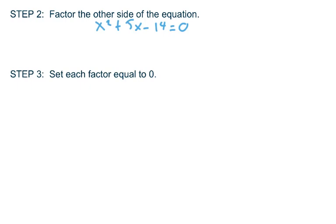Step two says factor the other side of the equation. It's a quadratic expression, a trinomial. We should be able to factor that by trial and error. What we would be looking for is two numbers whose product is negative 14, but whose sum is five. And that will inspire how this factors. You can see that if I factor that as x plus seven times x minus two, that indeed would give me x squared plus 5x minus 14.